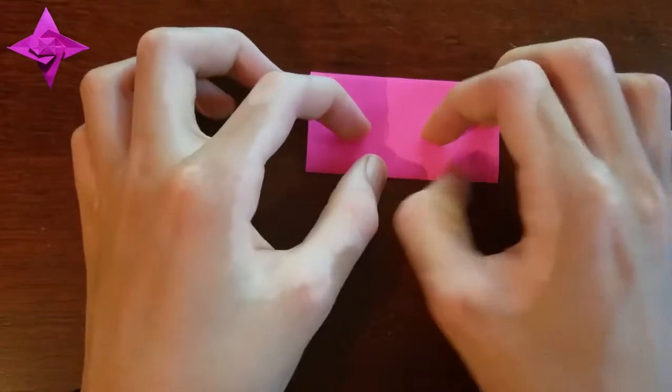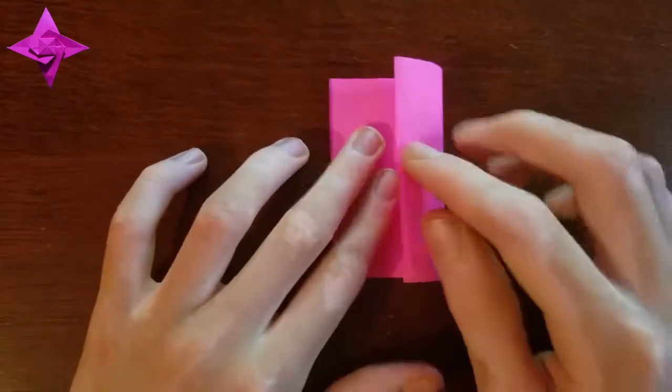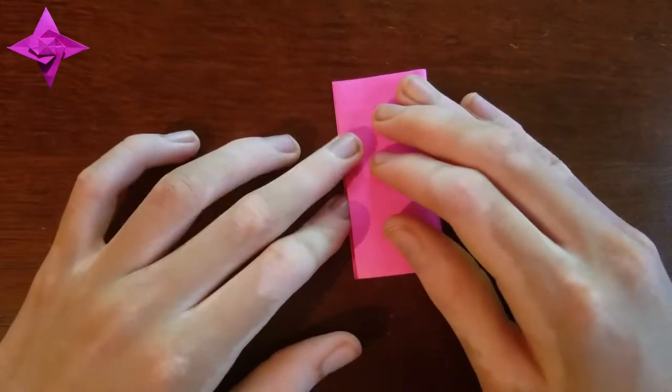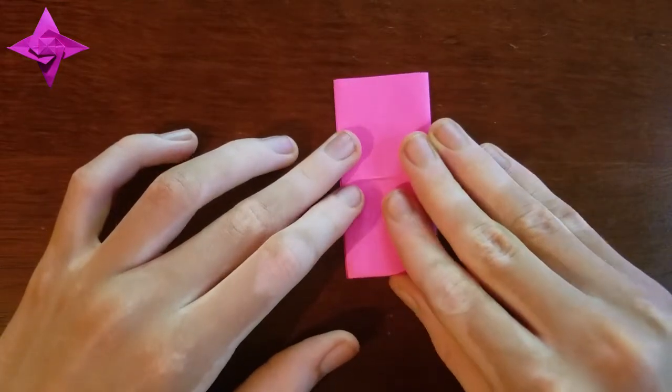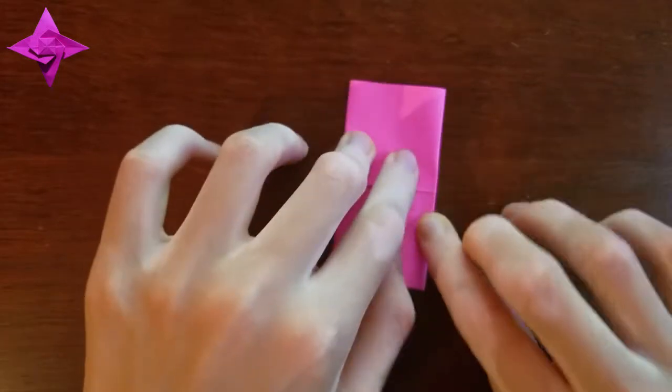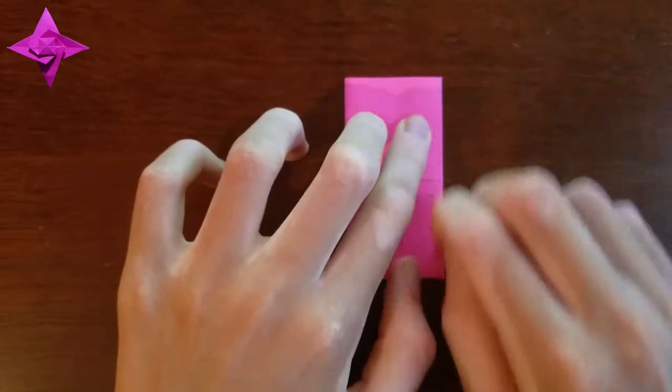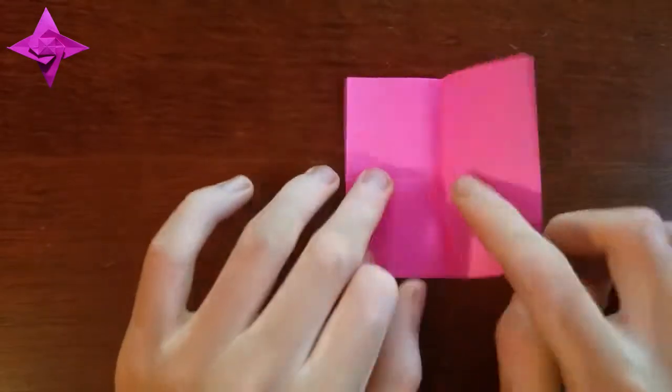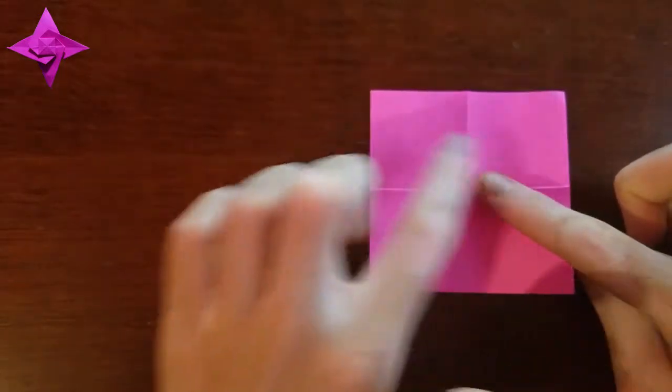We're gonna fold in half, unfold, and fold in half in this direction, then we're gonna unfold, turn the paper over and then fold diagonals.